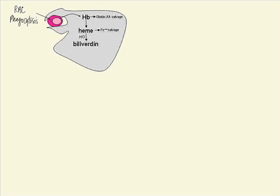Heme oxygenase acts to produce the green pigment biliverdin which is reduced by biliverdin reductase to the yellow pigment bilirubin.